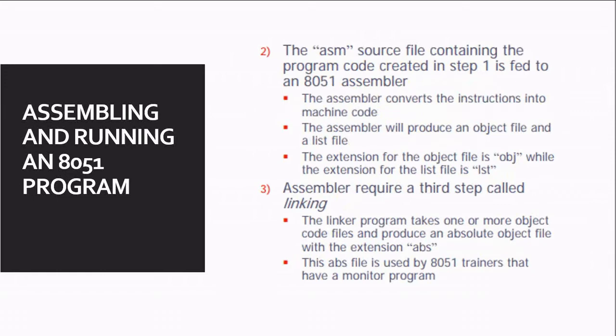The next step involves the .ASM or source file containing the program code. The ASM file contains the source code. In this step the assembler of the 8051 converts the instructions into machine code, and then the assembler produces an object file and a list file. The extension for the object file will be .obj and the extension for the list file will be .lst.